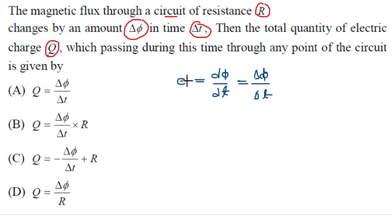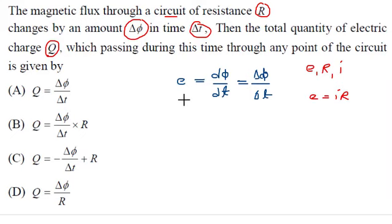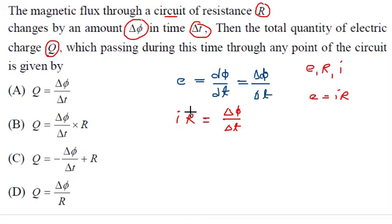If E is the EMF, R is the resistance, and I is the current, then by Ohm's Law V = IR, so E = IR. Substituting: IR = dφ/dt. Current I is defined as charge Q flowing through a point per unit time, so I = Q/dt. Therefore (Q/dt) × R = dφ/dt.